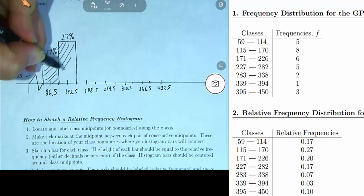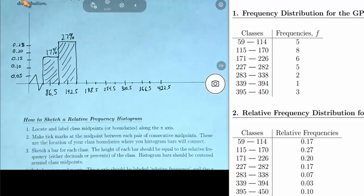And the bar, again, needs to be centered about the class midpoint and second class. Next relative frequency, 20%.